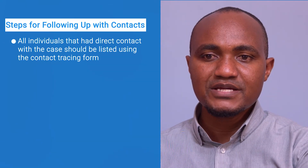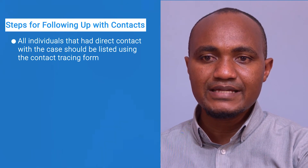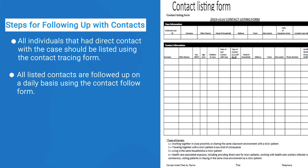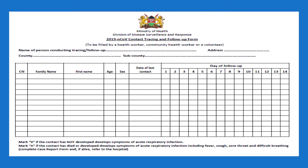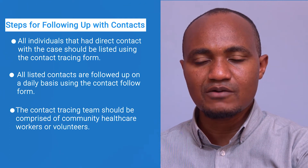Now let's take up the steps required for listing and following up with contacts. When a suspected, probable, or confirmed case is detected, all individuals that had direct contact with the case should be listed using the contact tracing form. All listed contacts are followed up on a daily basis for the next 14 days from the day of last exposure using the contact follow-up form. The team performing listing and follow-up should comprise of community health volunteers and community health worker supervisors, supervised by healthcare workers.